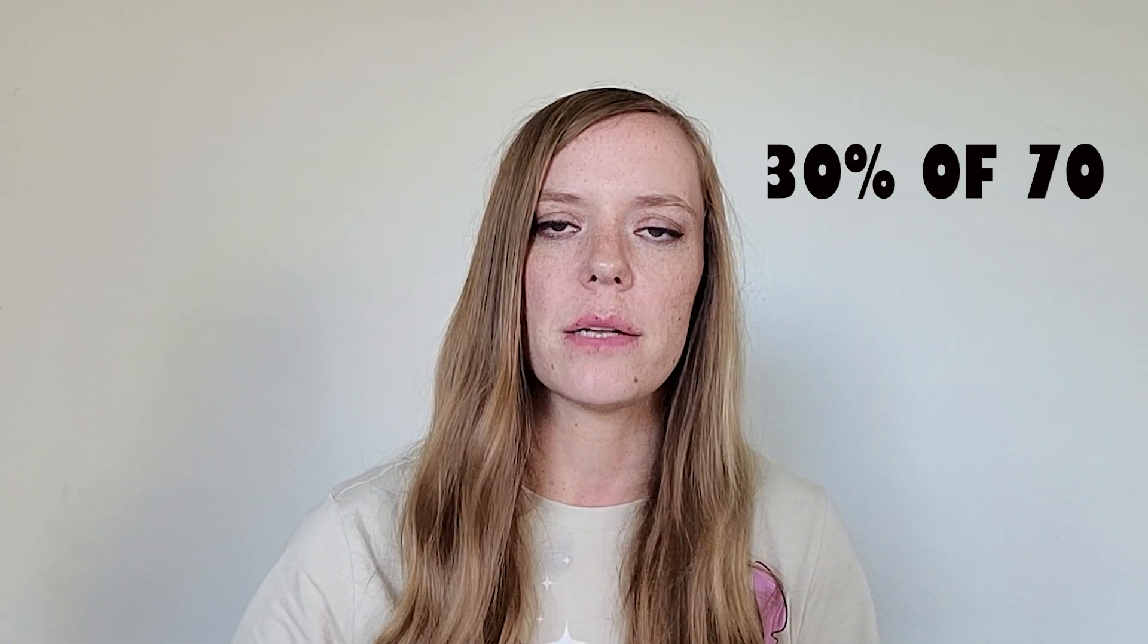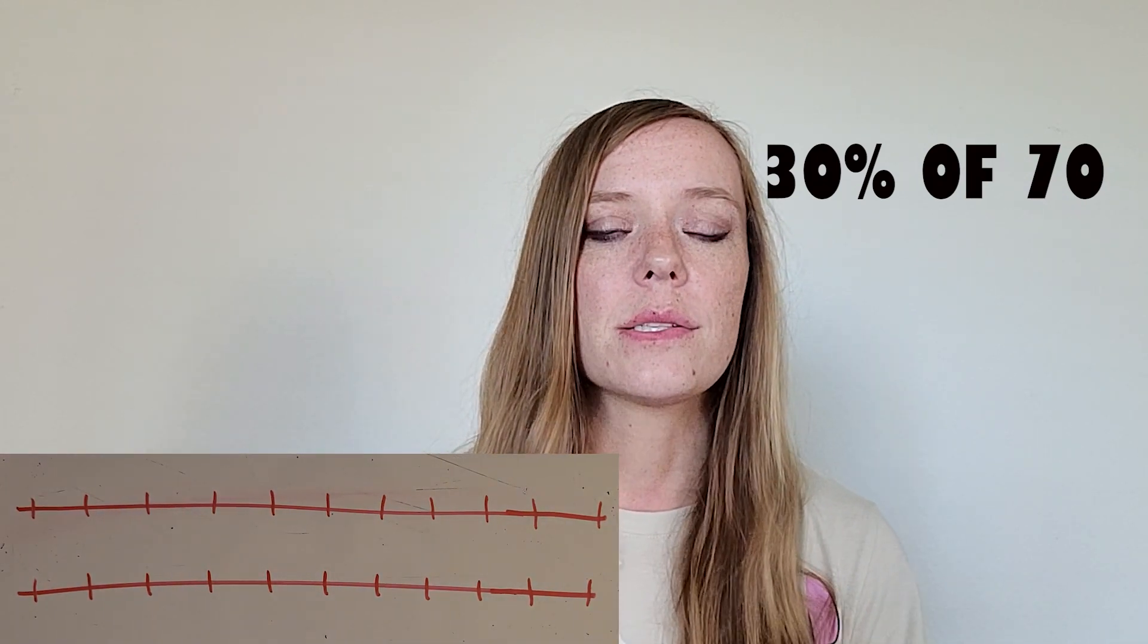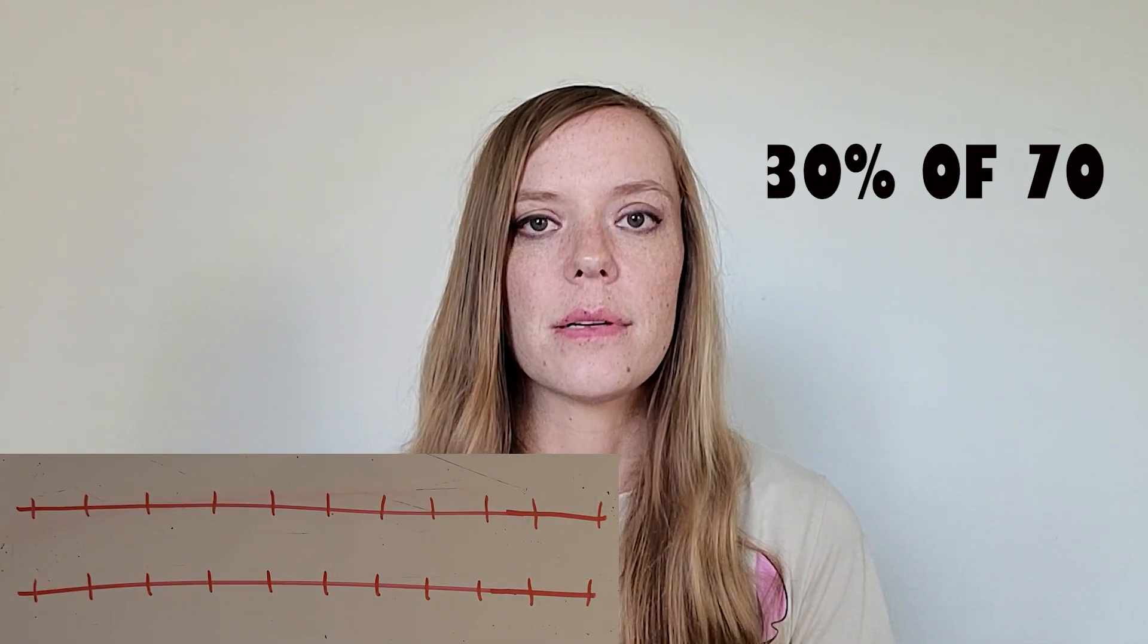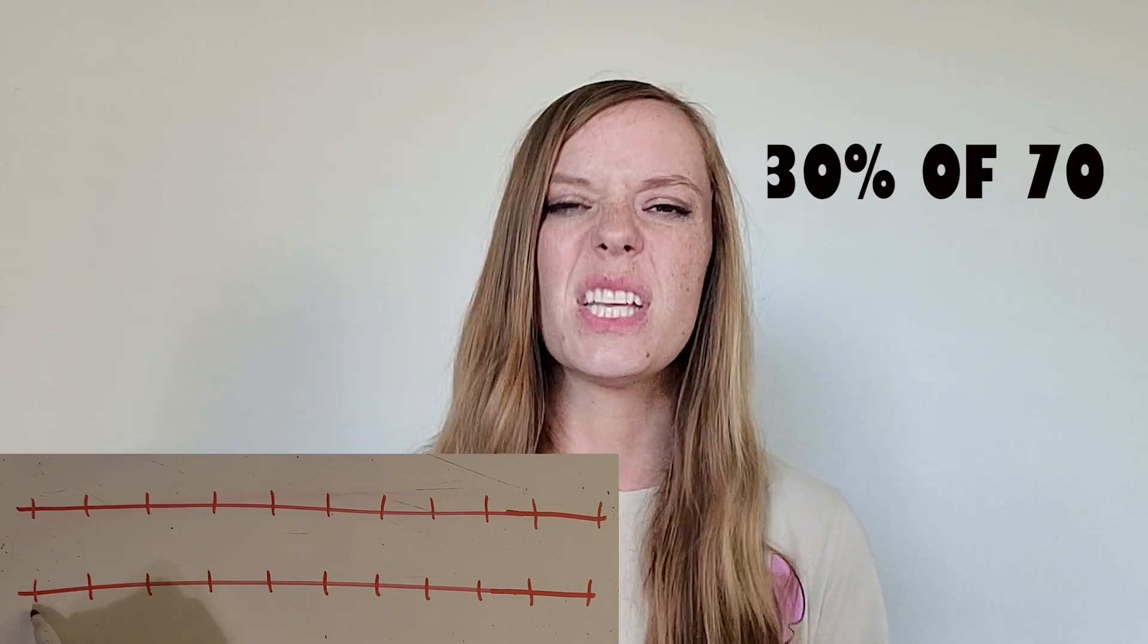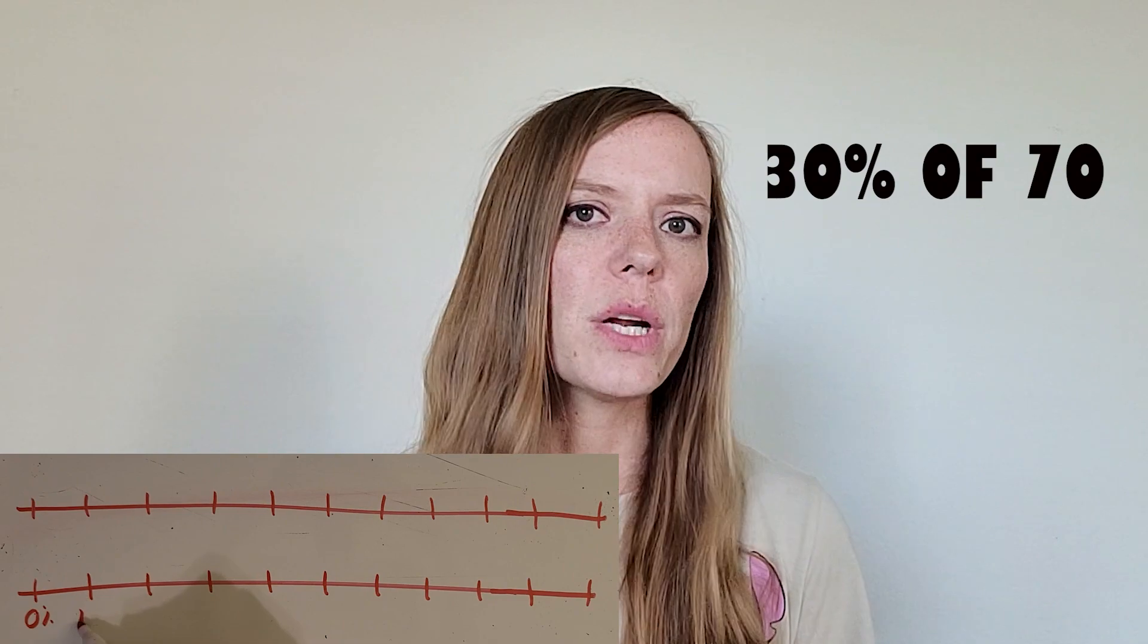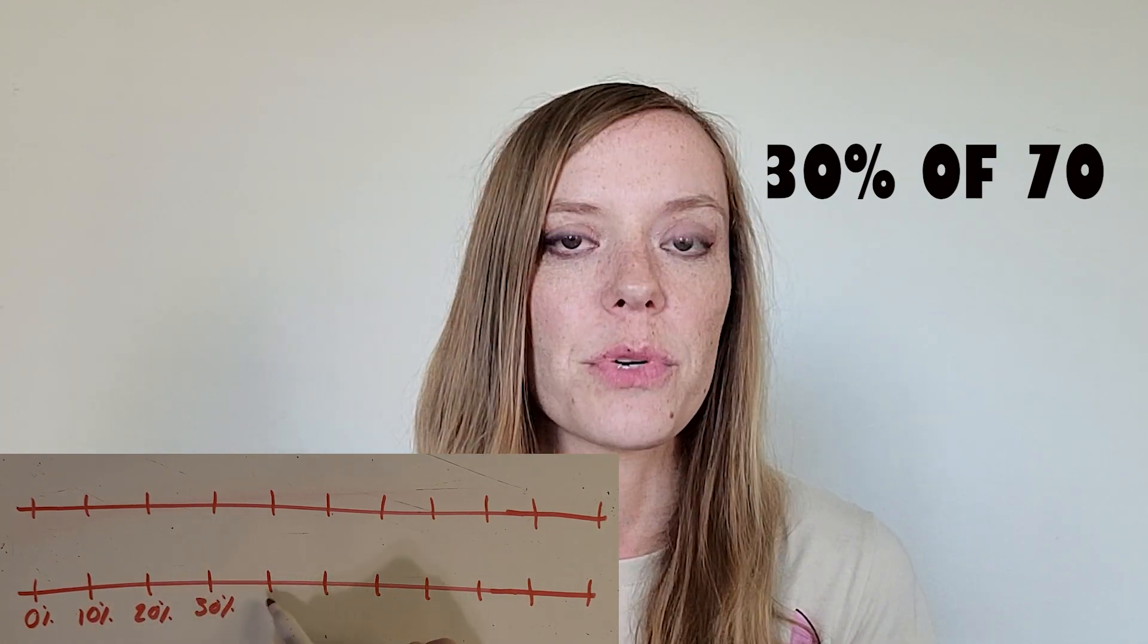One of my favorite ways to go about this is to create a double number line. So we're going to think about our percents as going by tens. That's one of the easiest ways to think through this. So there's 10 percent of a number, 20 percent, 30 percent, 40. Let's go all the way up to 100 percent.